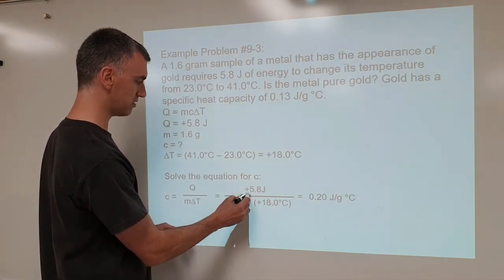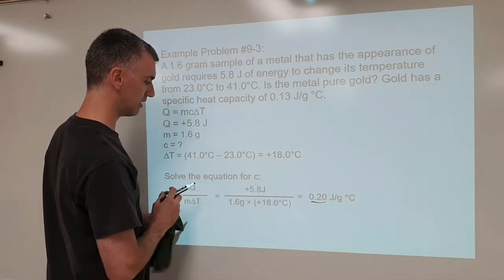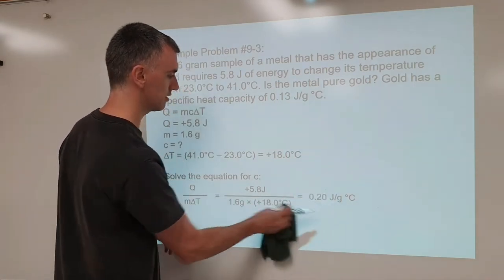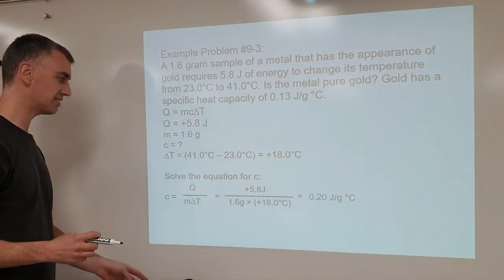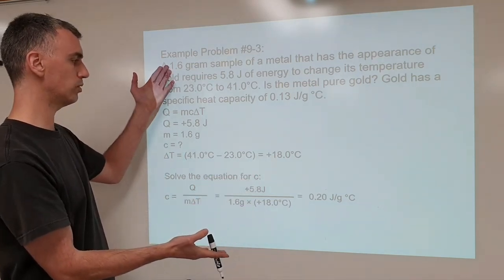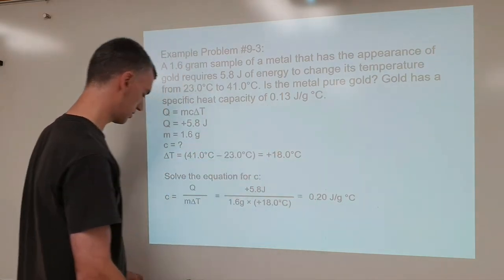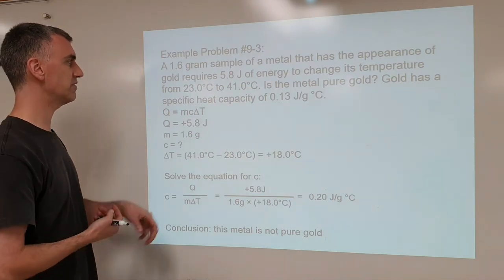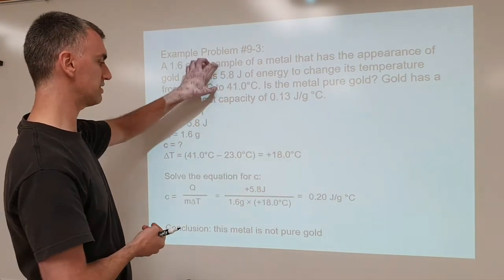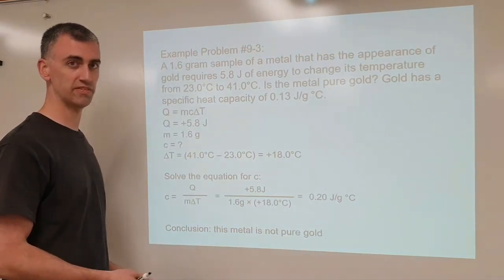There are two sig figs in the given data, and the answer comes out rounded to two significant figures. The units are joules per gram degree Celsius, which are the units of specific heat capacity. Now, this calculated value is not the same as the specific heat capacity of gold. Because the specific heat capacity of our sample does not match what gold should be, our sample is not made out of pure gold — mixing gold with something else would change its specific heat capacity.